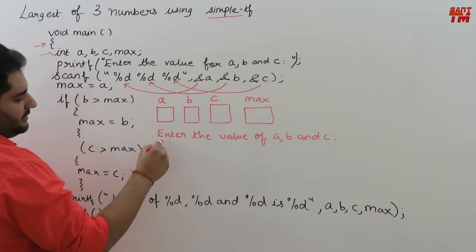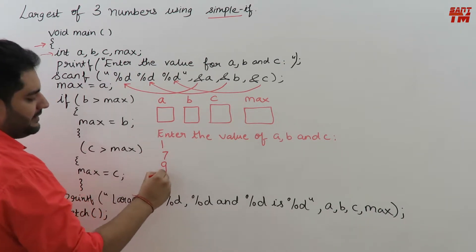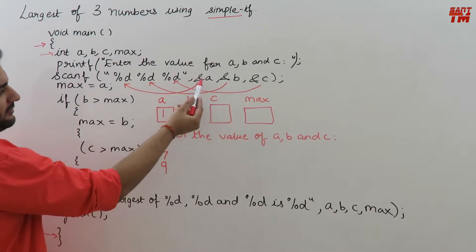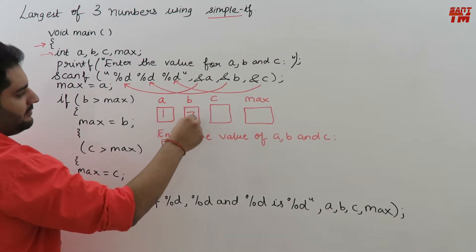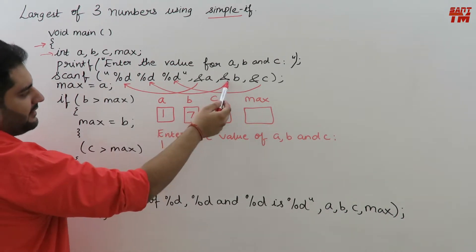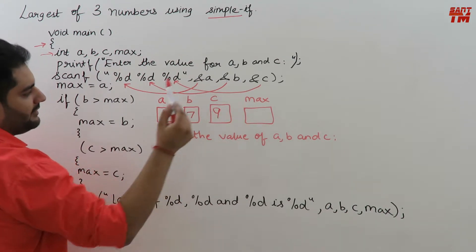Suppose I enter 1, 7, 9. These three values are entered. Then 1 will get assigned to a because first we are referring to the address of a. Then 7 will be assigned to b because second time we are addressing the b and 9 will be assigned to c likewise.